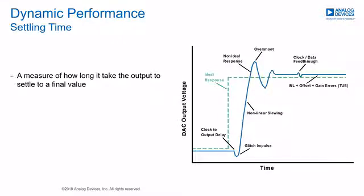An ideal DAC would transition from one level to another instantly and accurately. A real-world DAC, however, will not follow this ideal characteristic. When a new code is loaded, there is a delay before the output starts to change. The output will take time to transition to its new level, dependent on the slew rate. The output may not stop at the final value straight away — it may overshoot and oscillate before settling, and this can be load-dependent.